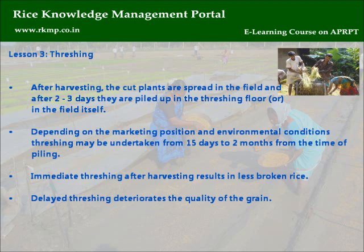Lesson 3 — Threshing. After harvesting, the cut plants are spread in the field, and after 2-3 days they are piled up on the threshing floor or in the field itself. Depending on marketing position and environmental conditions, threshing may be undertaken from 15 days to 2 months from the time of piling. Immediate threshing after harvesting results in less broken rice, while delayed threshing deteriorates the quality of the grain.